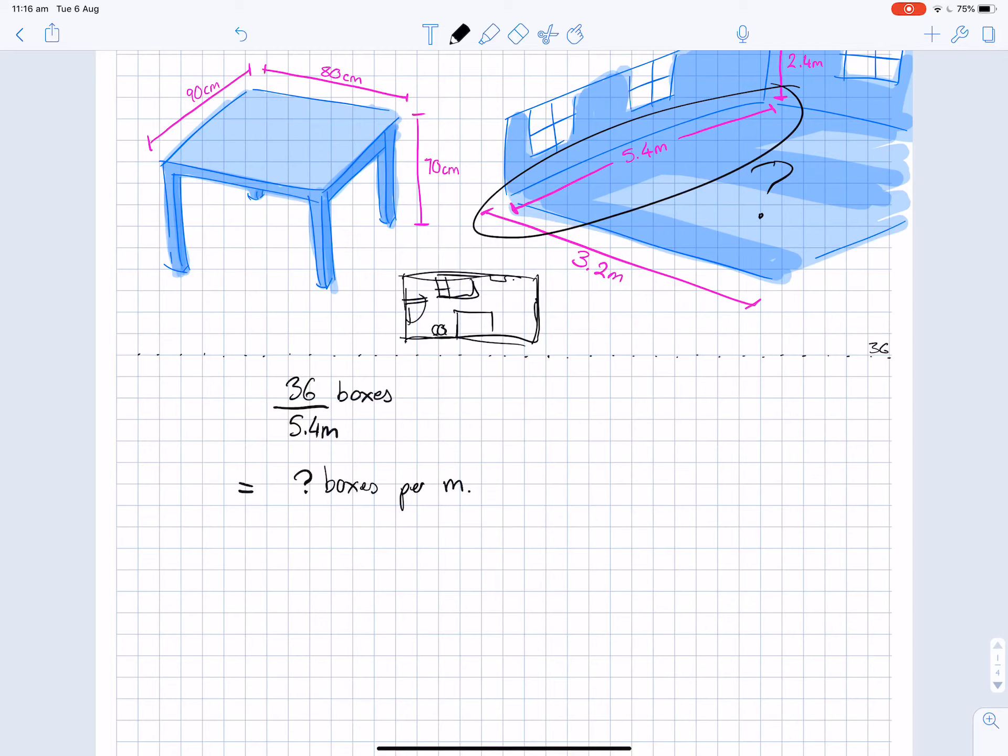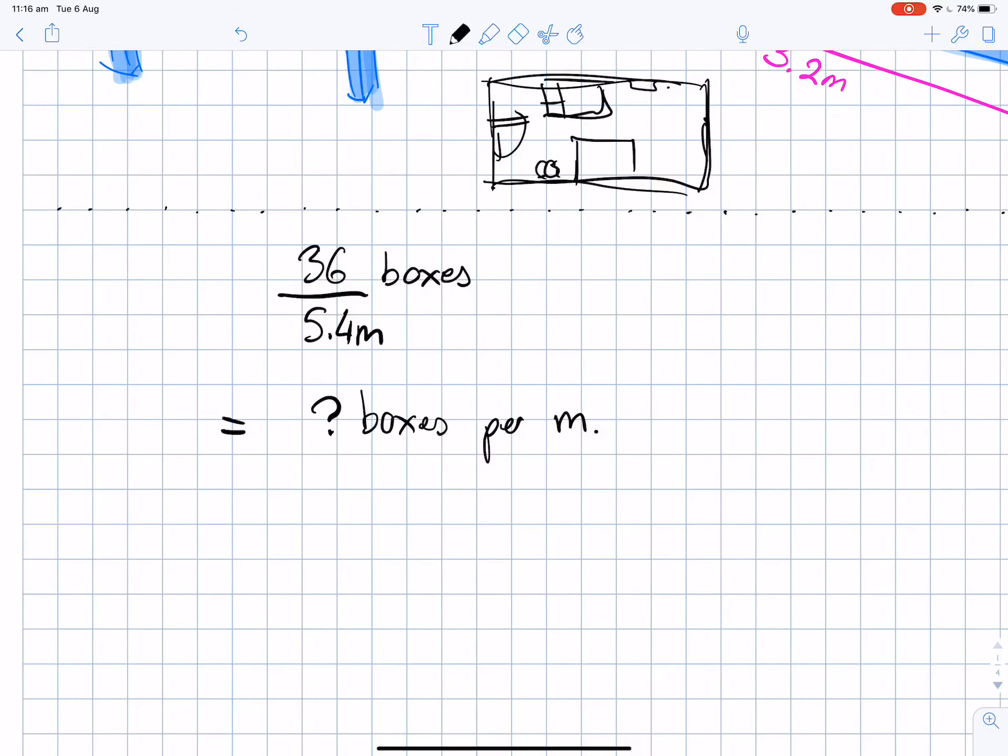So 36 boxes divided by 5.4 meters. I'm going to use the units here just to communicate clearly. If I could do this division, then I would effectively get some amount of boxes per meter. Currently I can't, at least by hand, because I couldn't think of a way to simplify the fraction such that the denominator becomes a single digit for me to do short division. I tried dividing top and bottom by two and it doesn't really help.